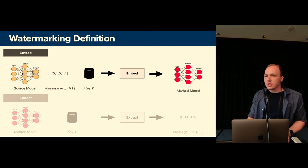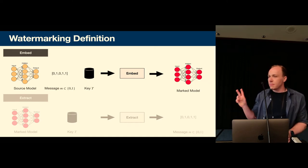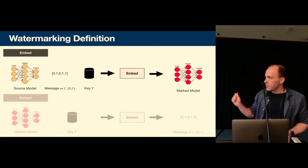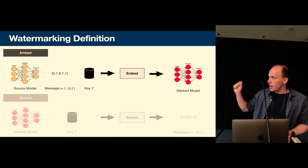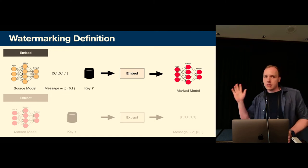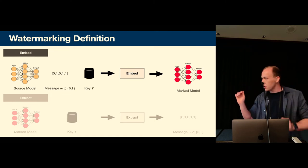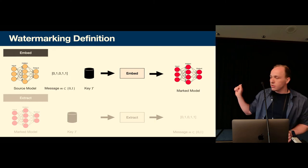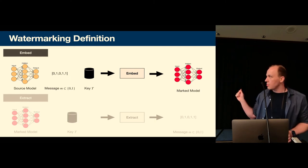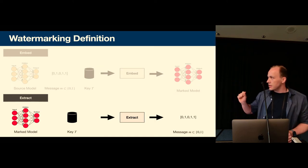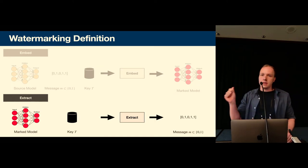So first what is watermarking? So watermarking can be defined by two functions namely the embedding and the extraction function. So during the embedding you have a source model, a message and a key. The key can be anything. It can be a vector, it can be images, whatever. And that is the input to the embedding function which then outputs a marked model.